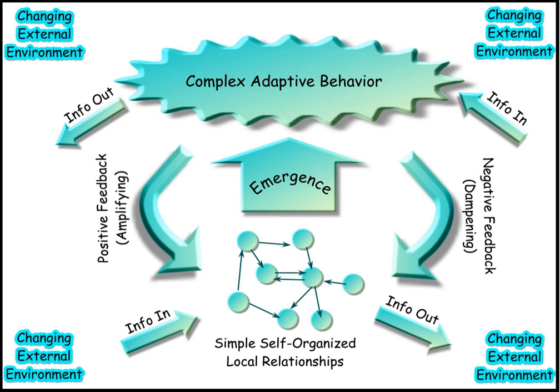John H. Holland said that CAS are systems that have a large number of components, often called agents, that interact and adapt or learn. Typical examples of complex adaptive systems include climate, cities, firms, markets, governments, industries, ecosystems, social networks, power grids, animal swarms, traffic flows, social insect colonies, the brain and the immune system, and the cell and the developing embryo.